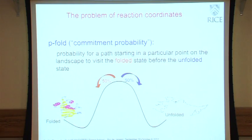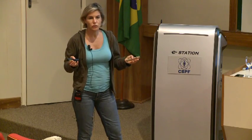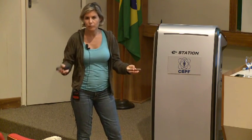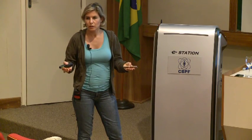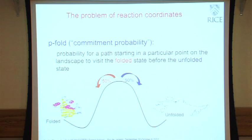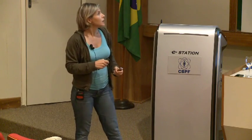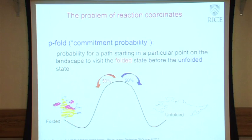Ideally, one could define the optimal reaction coordinate as the probability of folding — what's called the committer probability or commitment probability. If you have a two-state reaction with states A and B, you can define the reaction coordinate as the probability of going to A before going to B. There is a wonderful, very rigorous mathematical theory formulated on this, most of the work done by Eric van den Heiden. But in my opinion, it's not extremely useful in practice for protein folding and global motion in macromolecular systems.